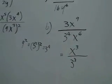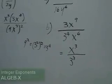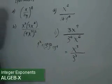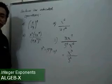So the result, when you divide x to the 5th times 3x to the 4th by quantity 9x cubed squared, is x cubed over 3 cubed.